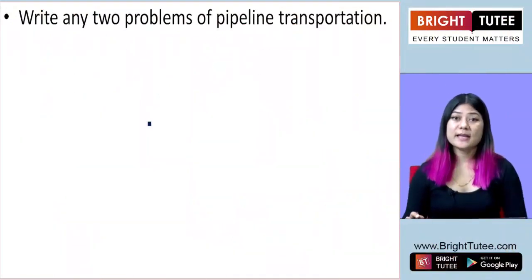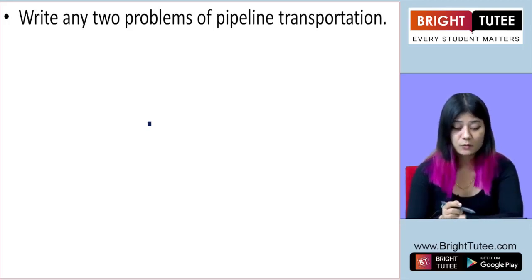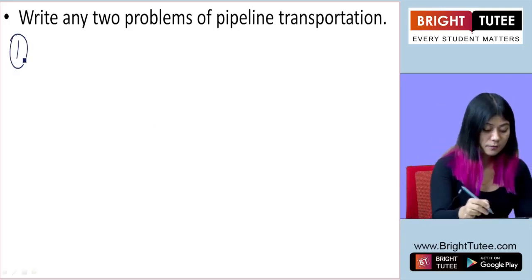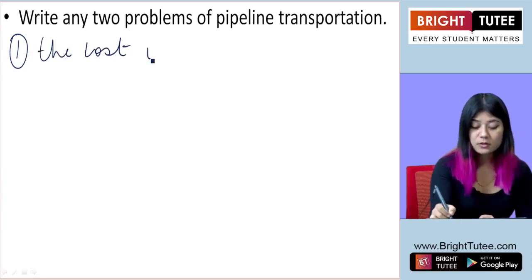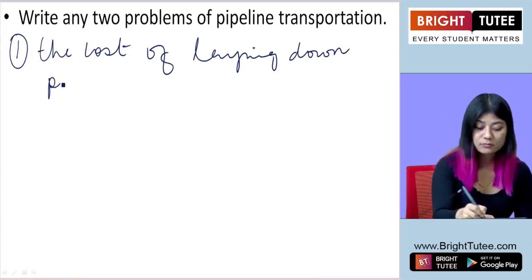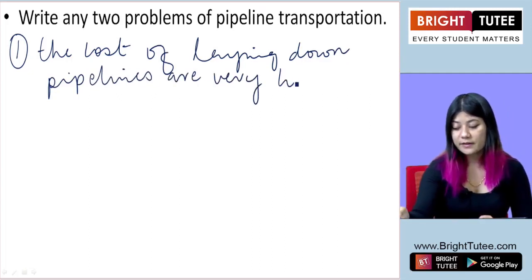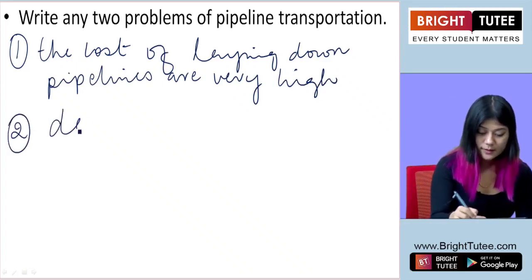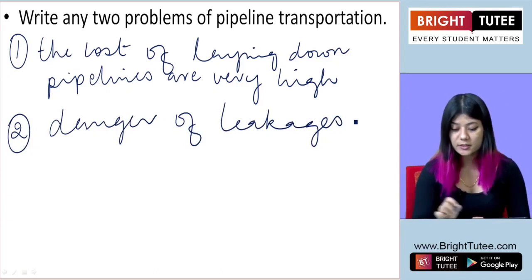With that we come to the end of this section. Here we have a question: write any two problems of pipeline transportation. The first problem is the cost of laying down pipelines is very high, and it has the danger of leakage. These are the two problems of pipeline transportation.